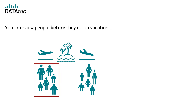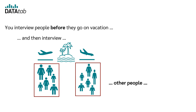Possibility one is you ask people before they go on vacation and then you ask other people after they come back from vacation. In this case, you would have an independent sample, because the people you interviewed before the vacation have nothing to do with the people you interviewed after the vacation.